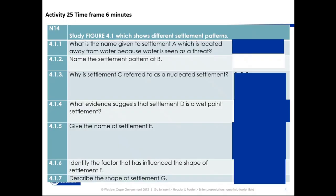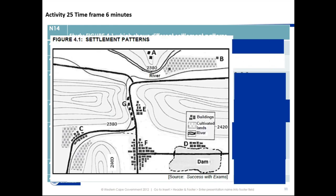In front of you, you have got questions and also this drawing. I'm going to give you a few minutes and I want you to fill in your answer sheet. Question number one, 4.1.1: what is the name given to the settlement A, which is located away from the water because water is seen as a threat? The clue is: we are talking about either a dry point settlement or a wet point settlement.